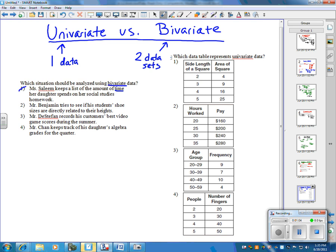Now, two is going to be the answer, but let's talk about why three and four aren't. For three, it says he's going to record his customer's best video game scores. And he's only doing one type. So, again, that's going to be univariate. With four, same thing. He's just keeping track of grades. Again, univariate.